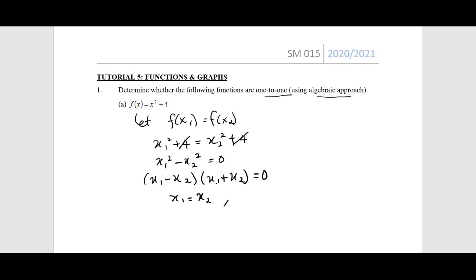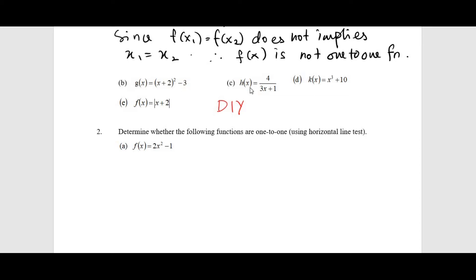But when x1 + x2 = 0, then you'll get x1 = -x2, which does not imply x1 = x2. Therefore, we can say that f(x) is not one-to-one function. For number 1b, 1c, 1d, and 1e, you can do it on your own.